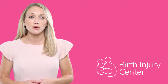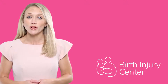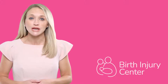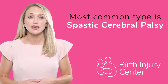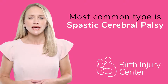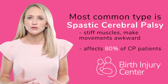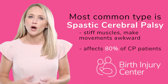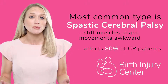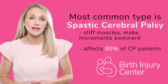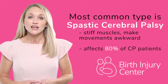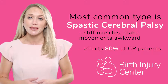Medical professionals give CP one of several classifications based on the type of movement disorder involved. The most common type of CP is spastic cerebral palsy. People with this type of CP have stiff muscles that make their movements appear awkward. Spastic cerebral palsy affects approximately 80 percent of patients with CP. Because different parts of the body can be affected, doctors break it down into subcategories.